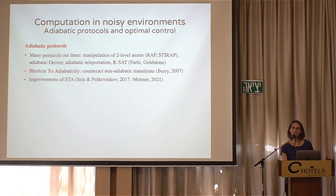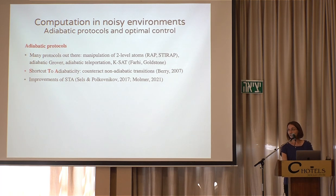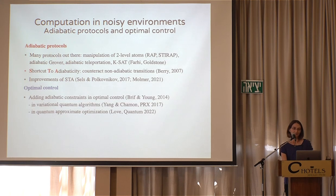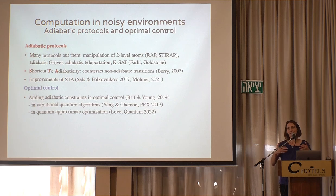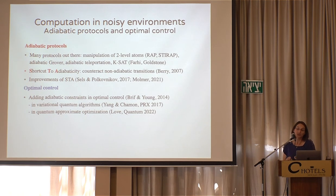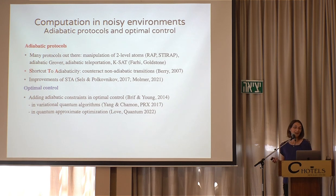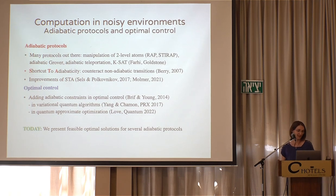There has been a lot of progress in recent years on how to improve shortcut to adiabaticity or adiabatic protocols to make them practical solutions to large problems. One of the very powerful tools is optimal control. I want to mention specifically recent works that add adiabatic constraints to optimal control — you can ask a computer for the optimal protocol performing a certain task, imposing conditions to minimize non-adiabatic jumps. There are very recent papers applying these ideas to variational quantum algorithms and approximate optimization. Today I will show our feasible optimal solutions for several specific adiabatic protocols.